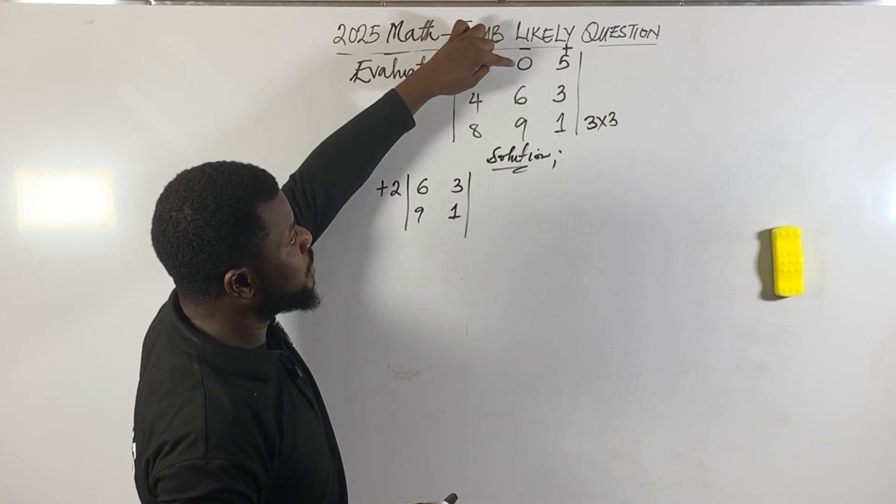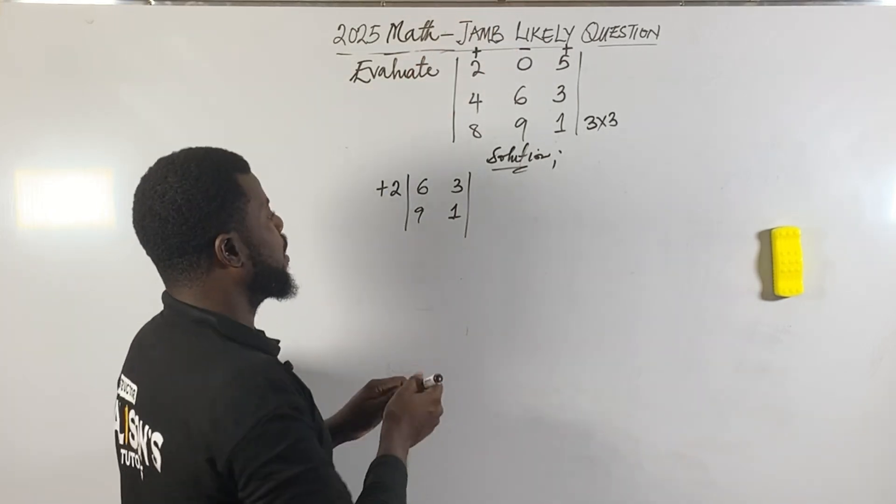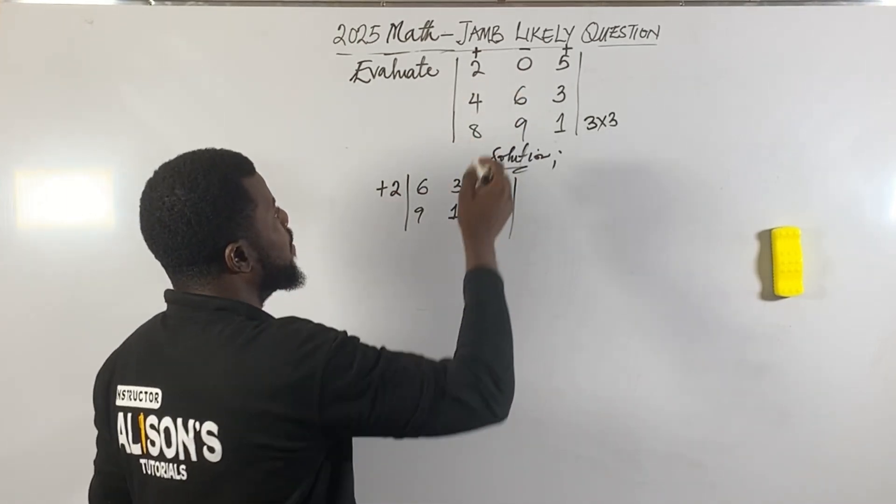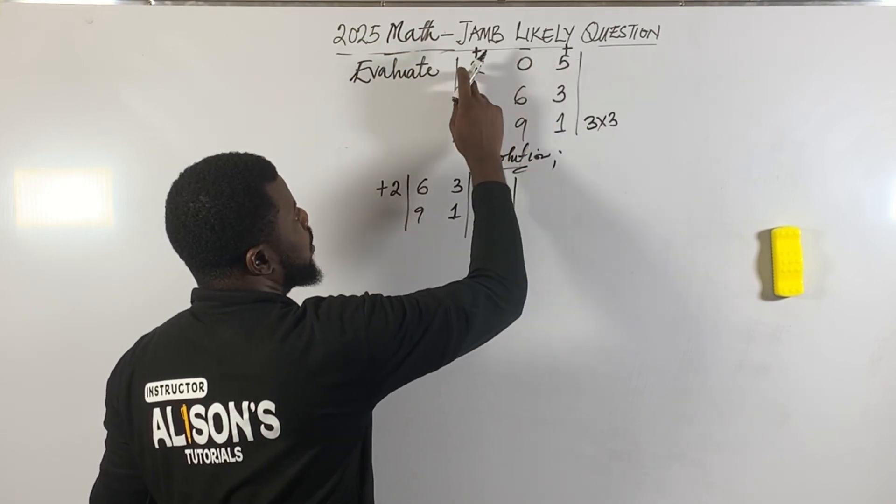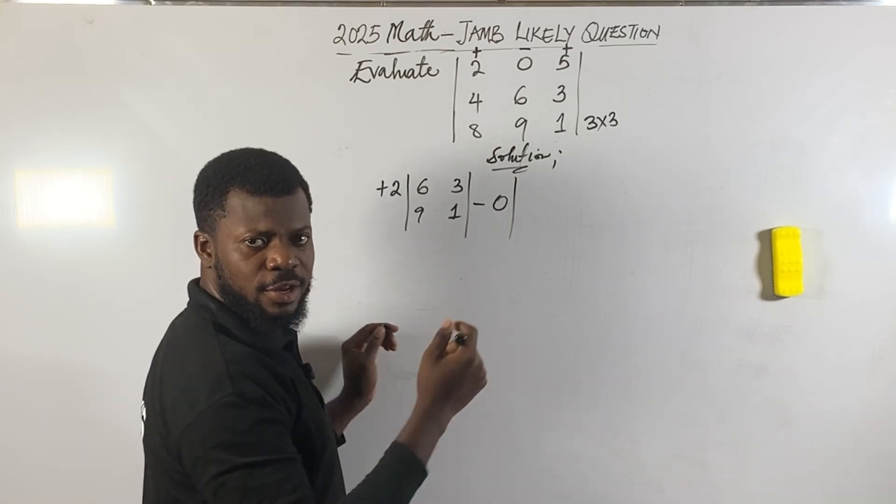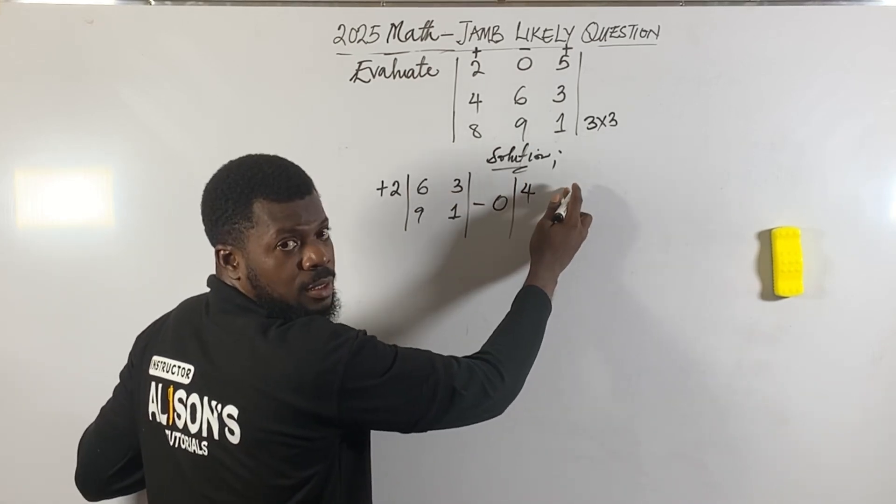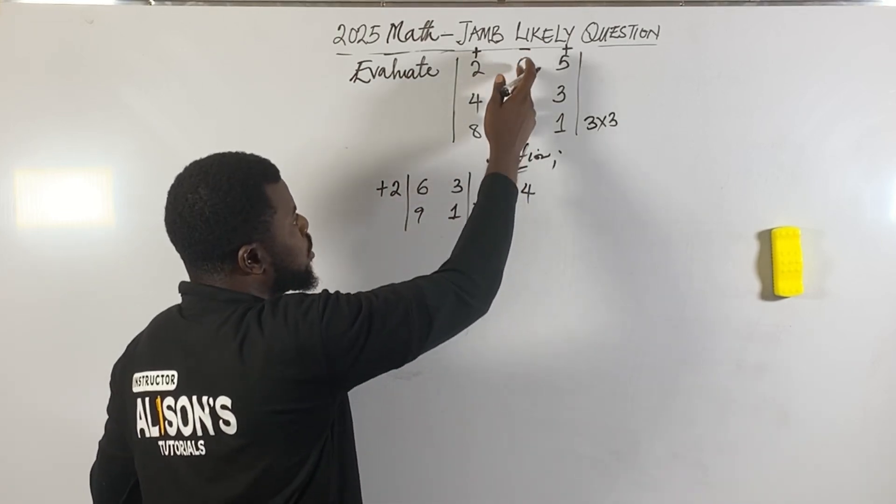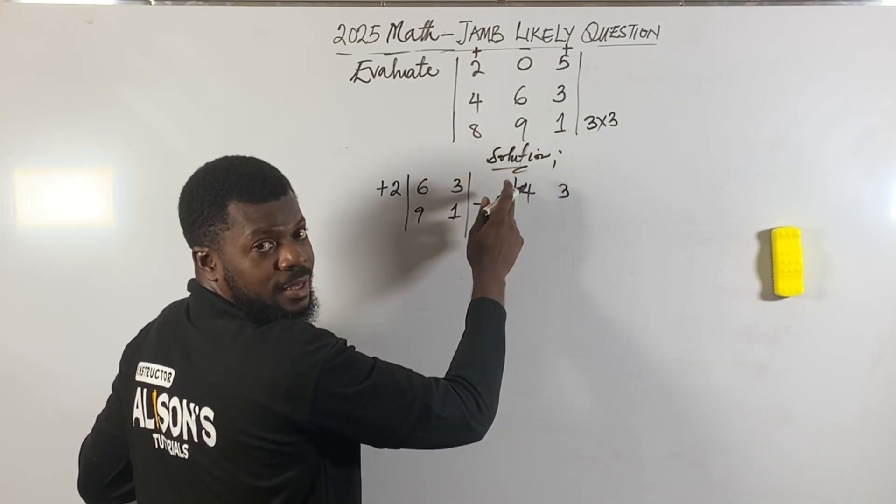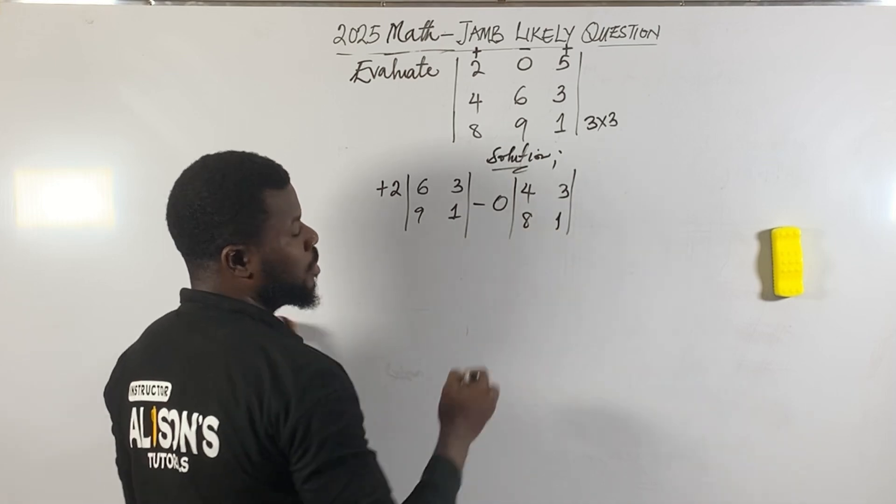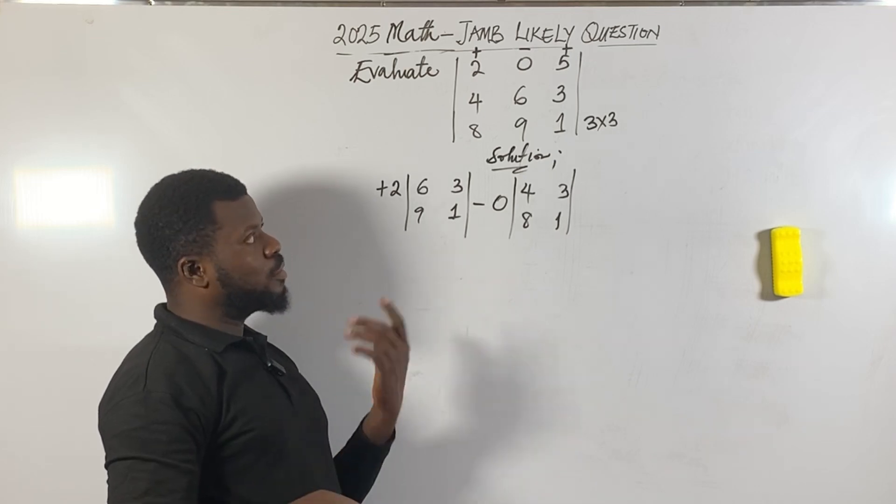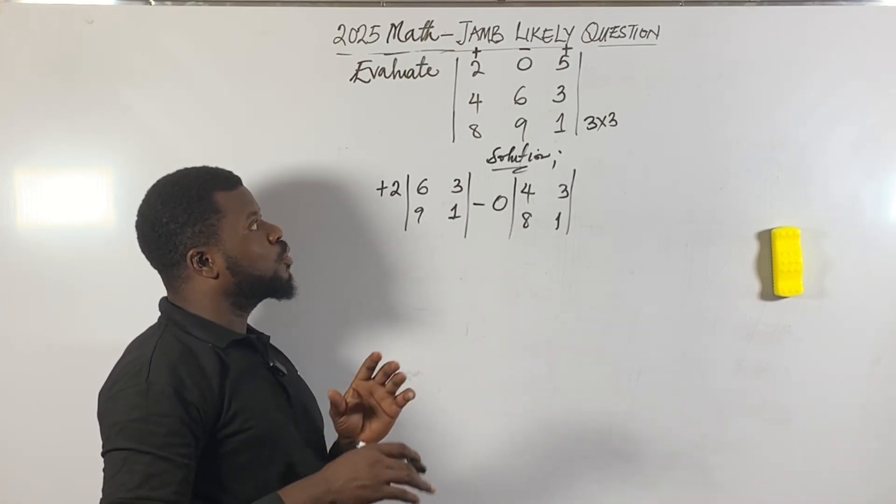Don't forget that sign - whether it's 0 or 30 or any number, the sign will be there. So plus 2 times (6×1 - 3×9). Now for the second element - this 0. Remember this element is in the same line, so you cancel the row and column, and what remains is 4, 3, 8, 1.